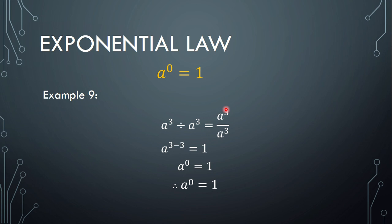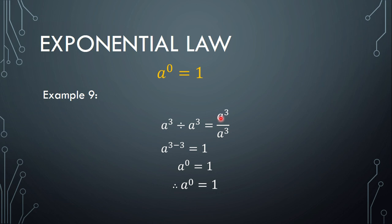Exponential laws number 9 and 10 are relatively simple. Law 9: a to the power of 0 equals 1. The base can be any value — 2, 10, or pi — but if the exponent is 0, the answer is always 1. We can verify this: a cubed divided by a cubed, using law 2, gives a to the power of 3 minus 3, which is a to the power of 0. And since any number divided by itself equals 1, we confirm that a to the power of 0 is 1.